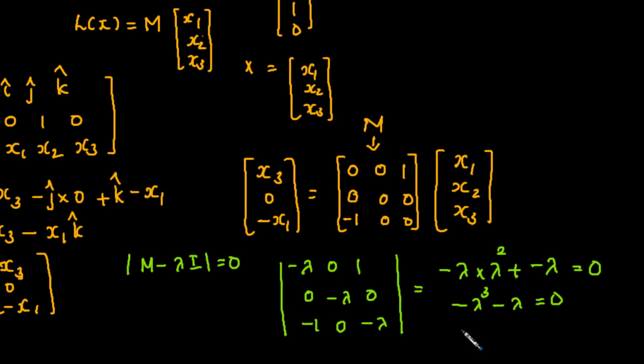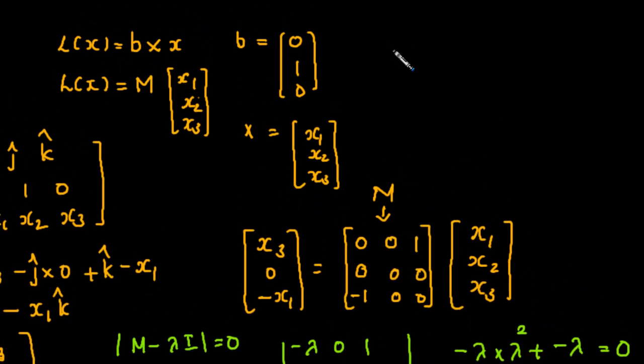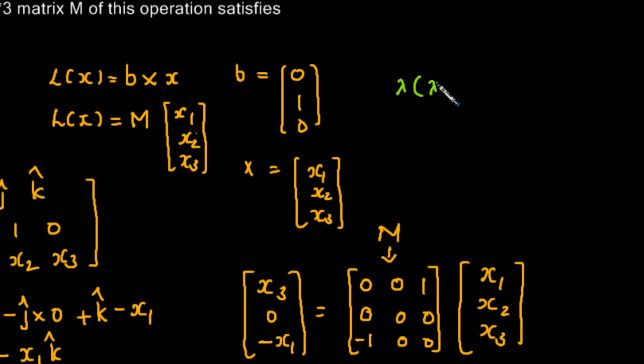So we have to equate to 0: -λ³ - λ = 0. That will be λ(λ² + 1) = 0. So we will continue it here: λ(λ² + 1) = 0.